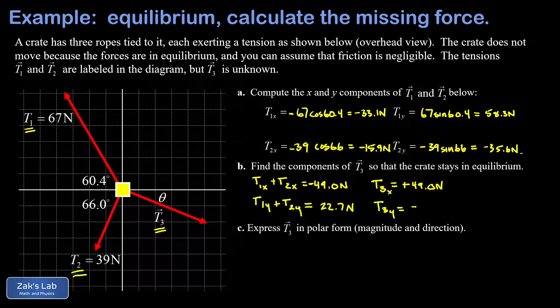Finally, in part c we're asked to express this vector t3 in polar form. That means we need the magnitude of it and the direction, and it's helpful to put these components we just computed into the diagram.